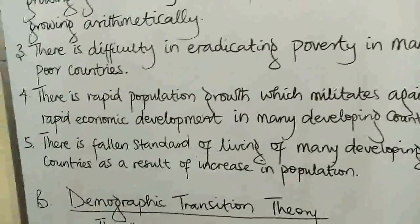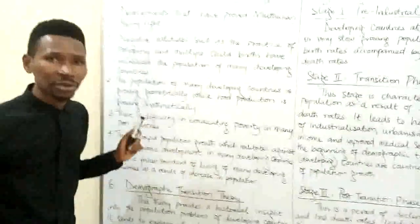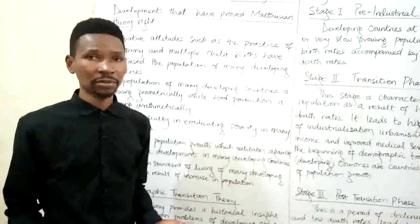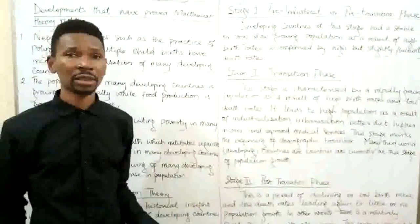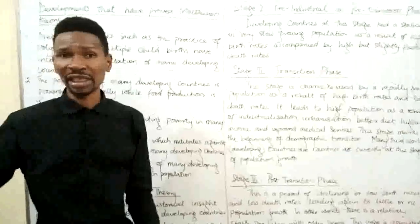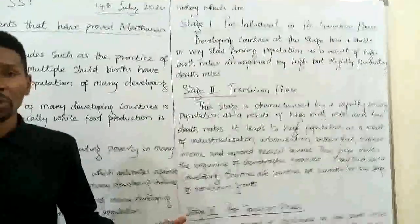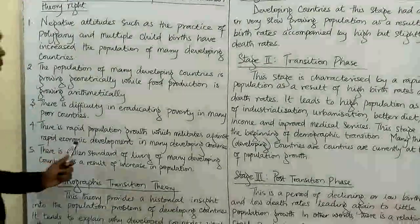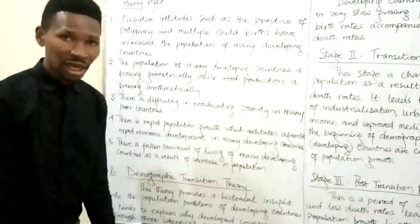Number five, there is a falling standard of living of many developing countries as a result of increase in population. People are not living comfortably — they cannot afford three square meals, a majority of Nigerians go to bed hungry, they can't even afford cars, and housing has become so expensive to afford. All these things have shown that Malthus was right — that an overly populated country will lead to a fall in the standard of living, things we are witnessing today in Africa, especially Nigeria.